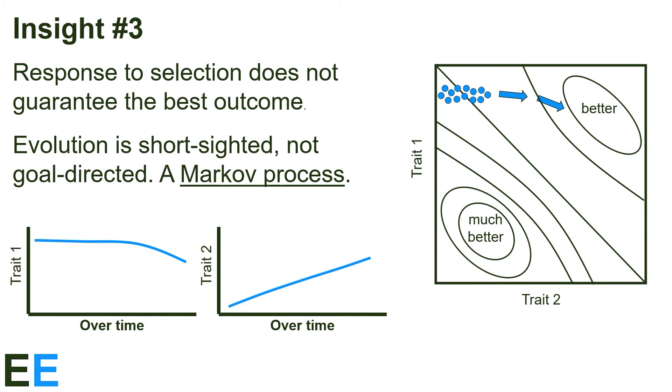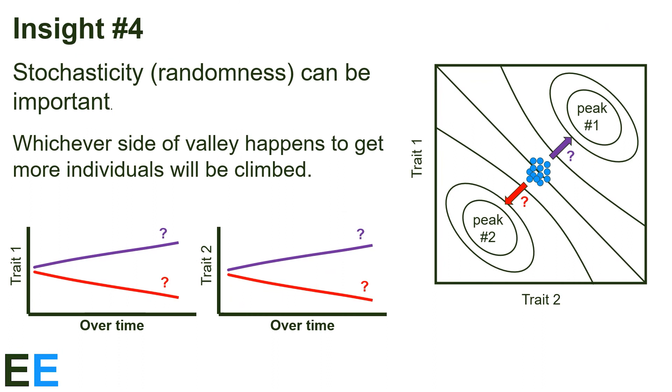For this reason, we say that evolution is short-sighted, not goal-directed. Technically, evolution is something called a Markov process, a system where the next step depends only on the current state, not the past or some final optimum.